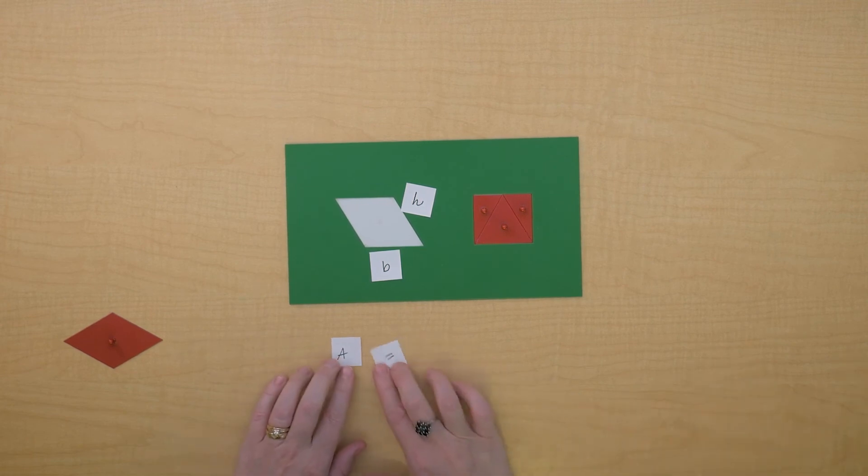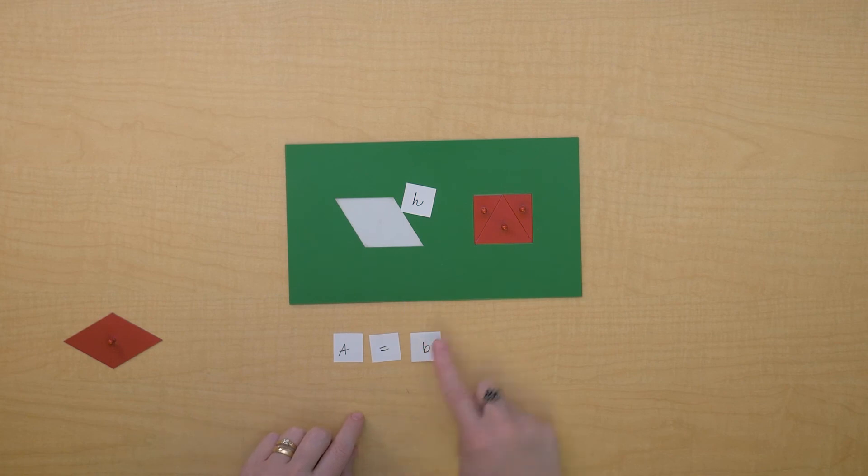So if we wanted to find the area of a rhombus, we could multiply its base times its height. I wonder if you'd like to explore finding the area of other rhombuses.